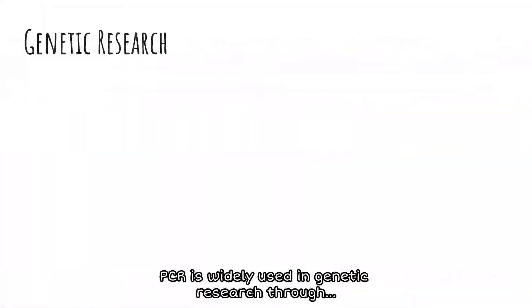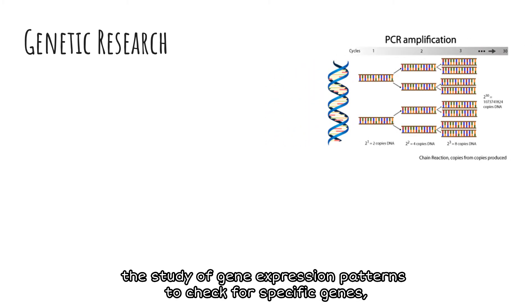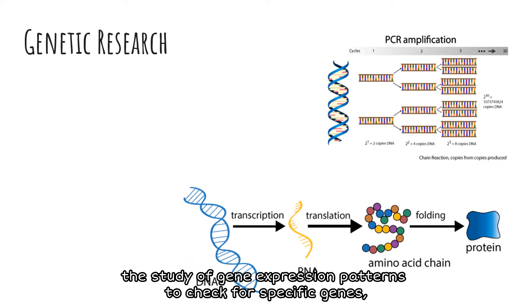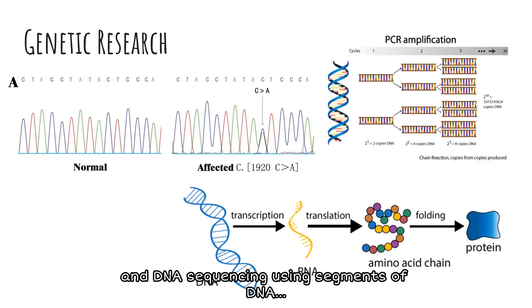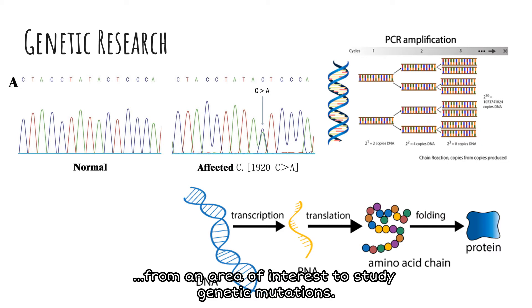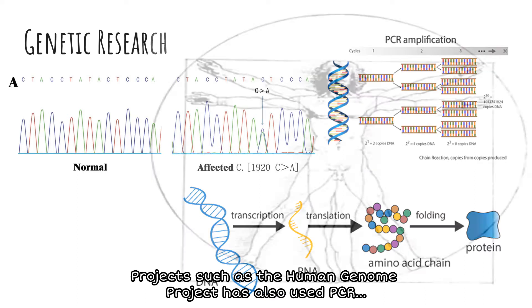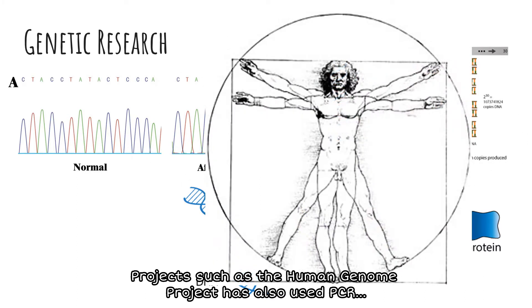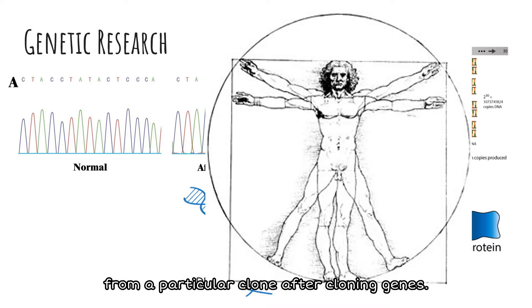PCR is widely used in genetic research through rapid amplification of tiny fragments of DNA, the study of gene expression patterns to check for specific genes, and DNA sequencing using segments of DNA from an area of interest to study genetic mutations. Projects such as the Human Genome Project have also used PCR to indicate the presence of a specific genome from a particular clone after cloning genes.